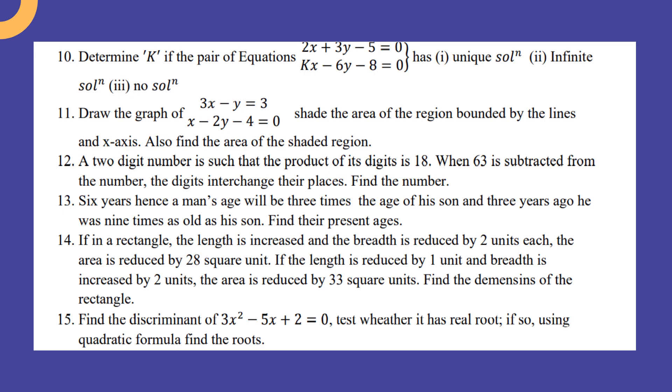A two-digit number is such that the product of its digits is 18. When 63 is subtracted from the number, the digits interchange their places. Find the number.